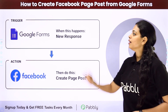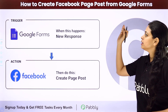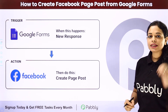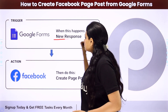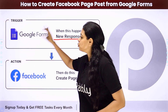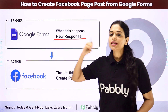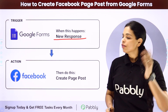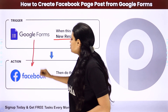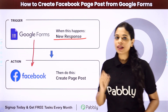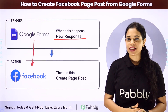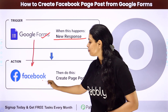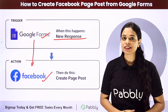In this video, we are going to see how to create a Facebook page post from Google Forms. Every time a new response is received through a Google Forms submission, we want to create a page post on Facebook using that data. For this, we will be integrating the two applications using PabblyConnect software. The trigger application will be Google Forms and the action application will be Facebook Pages.